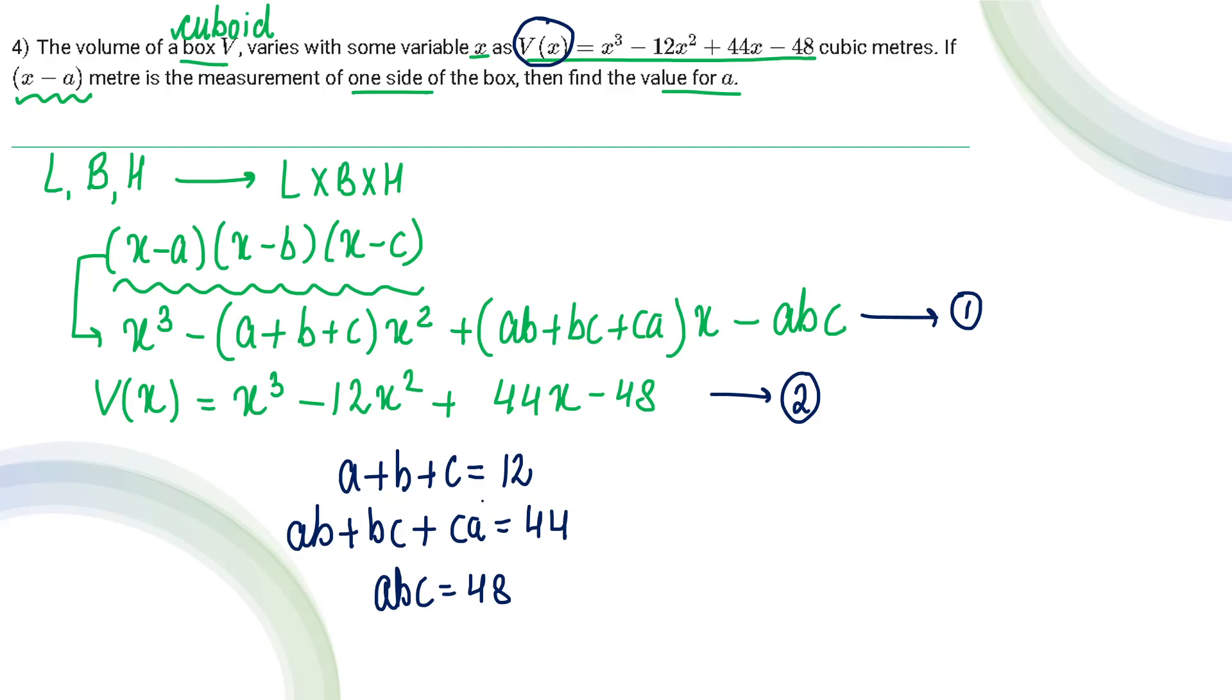So basically I have three variables a, b, c and three equations. So after solving these equations, I will be getting a as 2, b as 4, and c as 6.